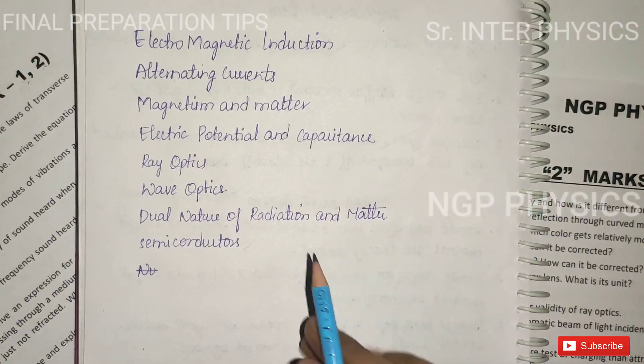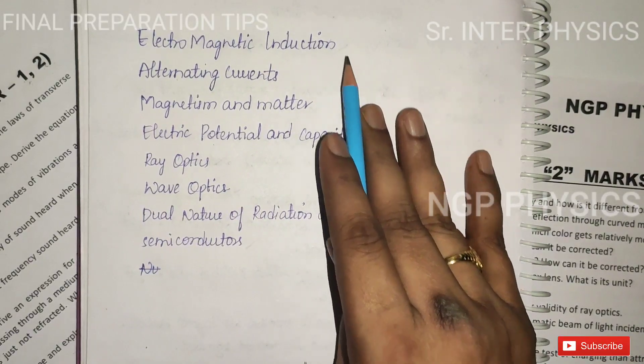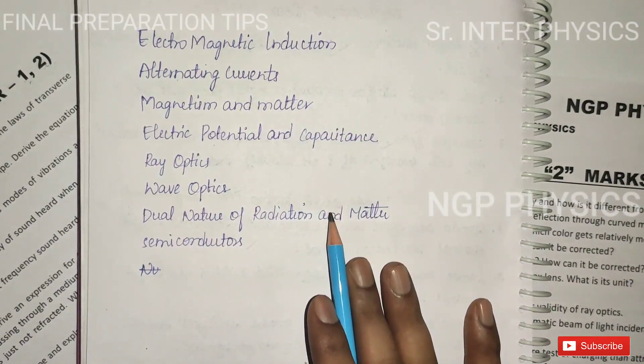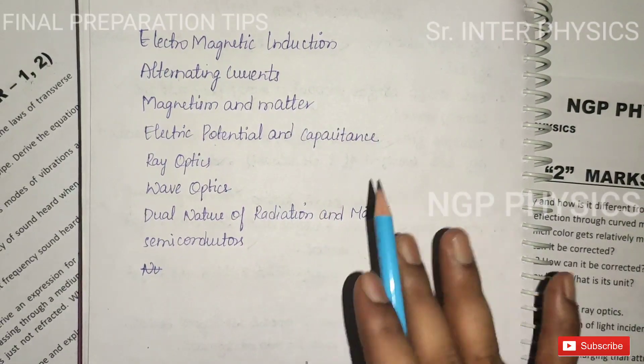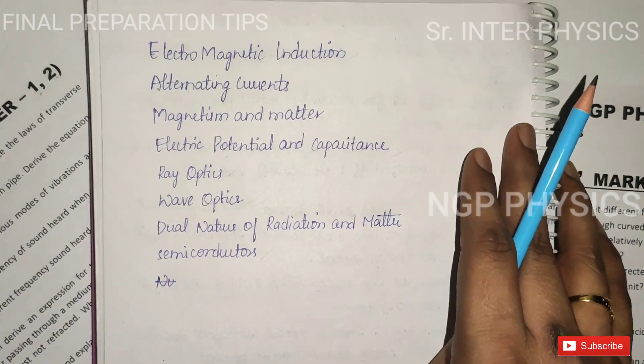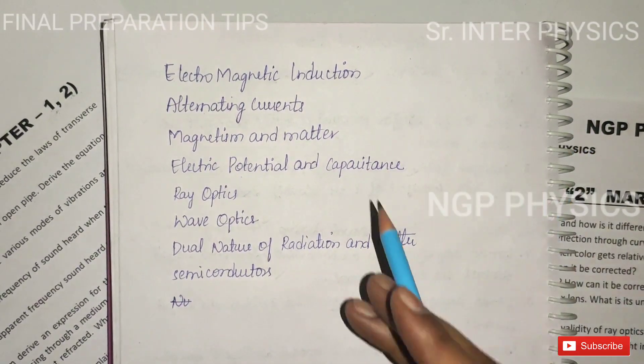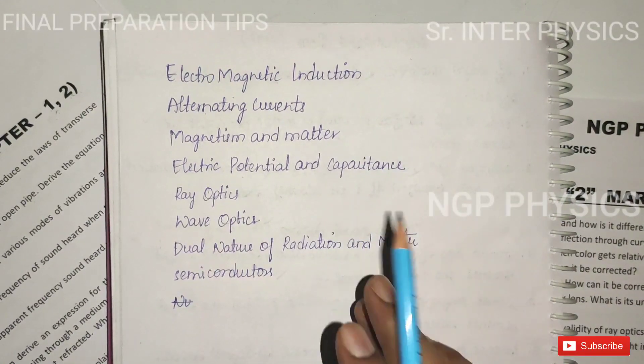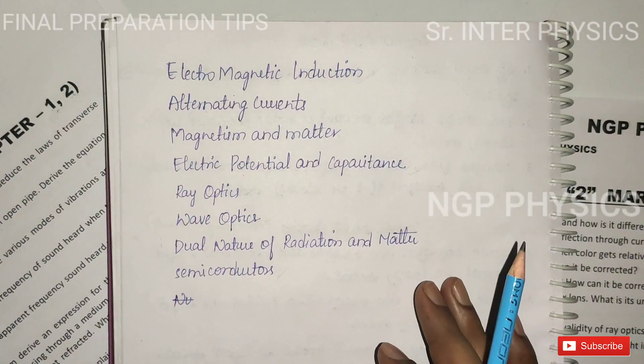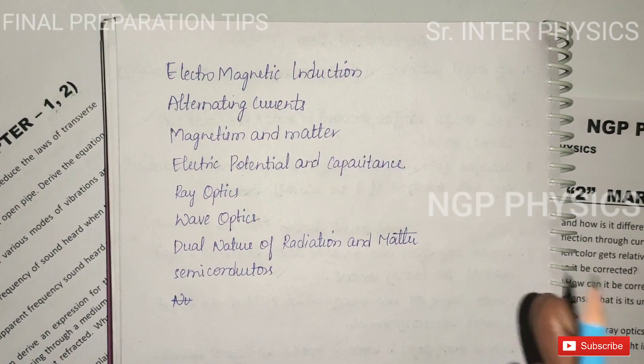First, we have SAQ chapters. The next one covers 6 chapters.